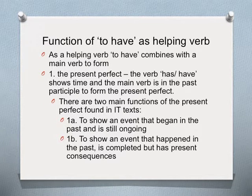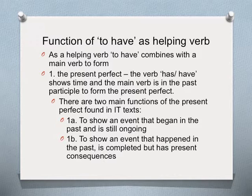Now we come to the function of to have as a helping verb. As a helping verb, to have combines with the main verb to form the present perfect, in which the verb has or have shows time, and the main verb is in the past participle, which forms the present perfect.